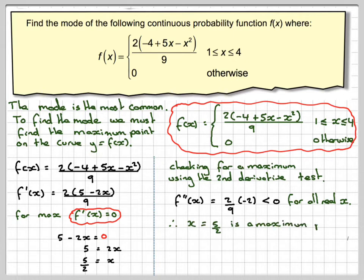Therefore, x equals 5/2 is a maximum point, and therefore the mode will be x equals 2.5.